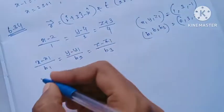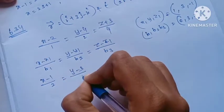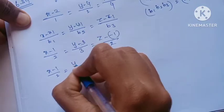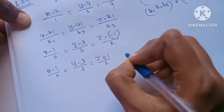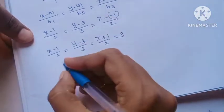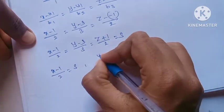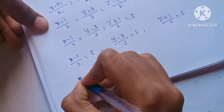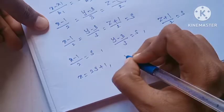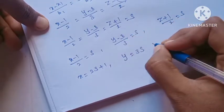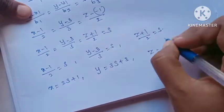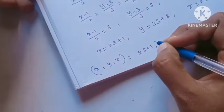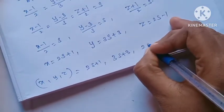Substituting into the first line equation: (x minus 1) by 2 = (y minus 3) by 3 = (z plus 1) by 2. Setting each equal to parameter s: x = 2s + 1, y = 3s + 3, z = 2s minus 1.